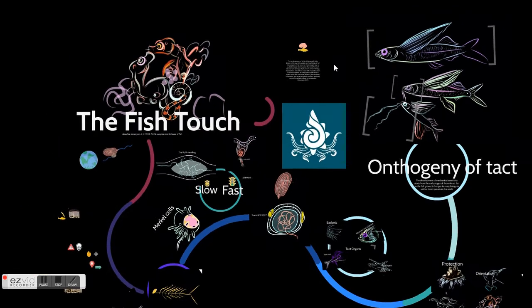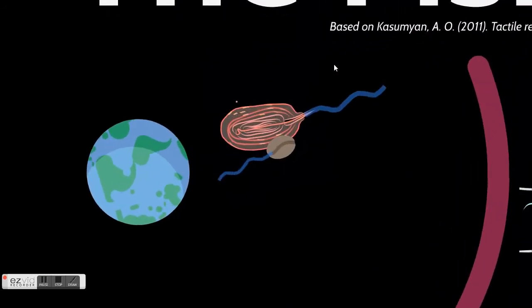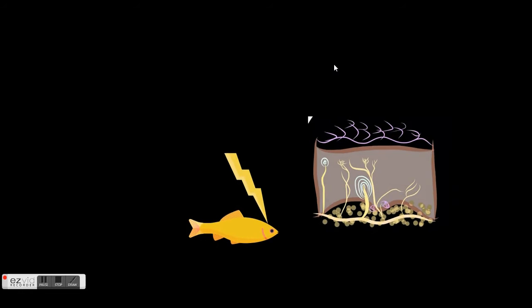It is thought that this sense is so ancient that it was present in early prokaryotes. It is through touch that animals recognize external stimuli and take the appropriate action.